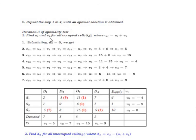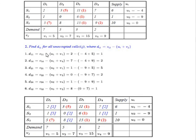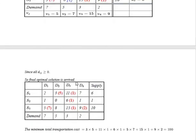Iteration 3 of the optimality test: Again find u_i, v_j for all occupied cells, then calculate d_ij for all unoccupied cells. From all d_ij values, we can see that all values are greater than or equal to zero. This indicates that the optimal solution is reached. The final optimal allocation table is as shown. The minimum total transportation cost equals 3×5 + 11×1 + 6×1 + 5×7 + 15×1 + 9×2 = 100. This is the minimum transportation cost.